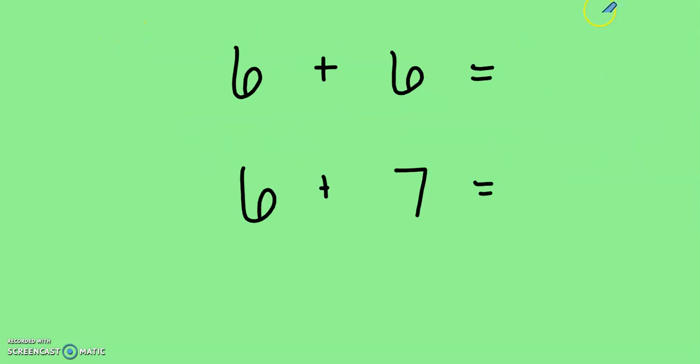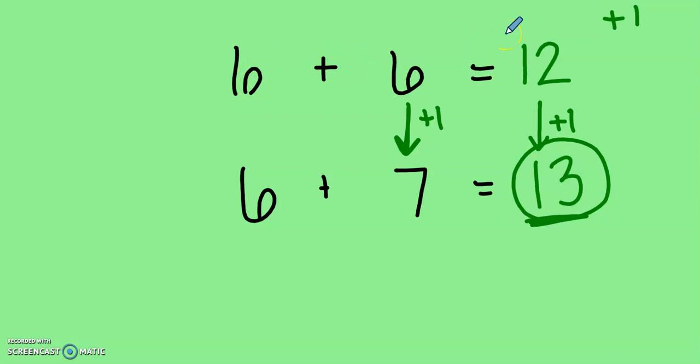Let's try another example of a double plus one. Now, let's say that I know the double, six plus six. Six plus six equals twelve. I remember those eggs. There were six on the top and six on the bottom. Now, let's look at our next equation, six plus seven. These two numbers are the same. But these numbers are not the same. I added one. From six to seven, I added one more. That means that in my answer, I will also add one. So instead of six plus six equals twelve, I can use my doubles plus one strategy and do six plus seven equals thirteen.